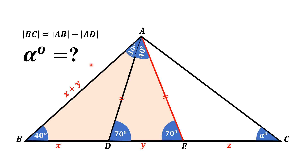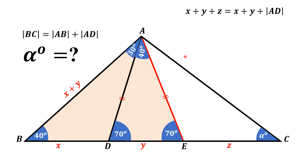From the given condition, BC equals AB plus AD. We can write this as x plus y plus z equals x plus y plus AD. The x plus y terms cancel on both sides, so z equals AD.